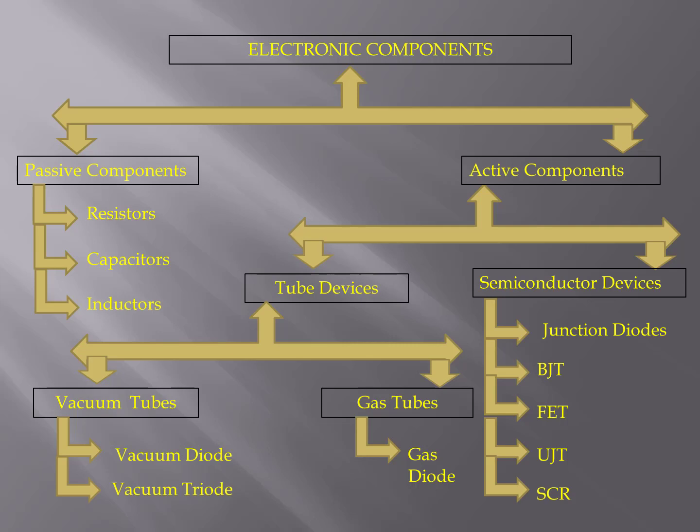Tube devices are further classified into vacuum tubes and gas tubes. Semiconductor devices include junction diodes, bipolar junction transistors, field-effect transistors, UJTs, silicon-controlled rectifiers, etc.